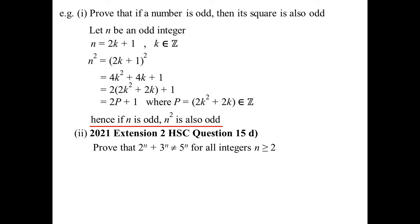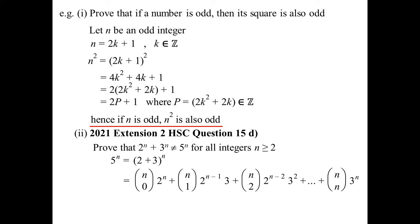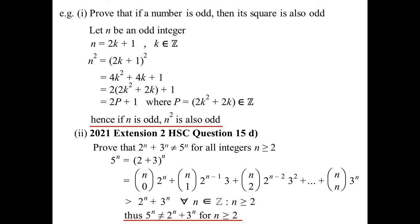This one from last year's HSC was interesting. Prove that 2ⁿ plus 3ⁿ does not equal 5ⁿ for all integers N ≥ 2. I'm going to rewrite 5ⁿ as (2+3)ⁿ. Using the binomial theorem, we expand that: NC₀ · 2ⁿ, NC₁ · 2^(n−1) · 3, and so on up to 3ⁿ. But these are all positive numbers, so it must be bigger than 2ⁿ plus 3ⁿ. The first term is 2ⁿ, the last is 3ⁿ, and there are all the middle terms. This holds for all N ≥ 2 — if N equals 1, you'd just get 2 plus 3 which is 5, so they'd be equal. Quick proof.